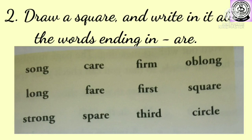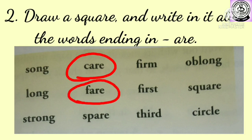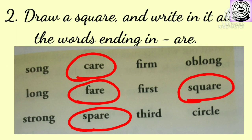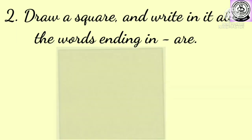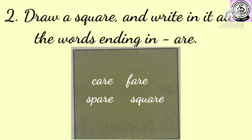Question number two: draw a square and write in it all the words ending in A-R-E. C-A-R-E care, F-A-R-E fare, S-P-A-R-E spare, S-Q-U-A-R-E square. You will draw a square and write down all these words in it: care, fare, spare, square.